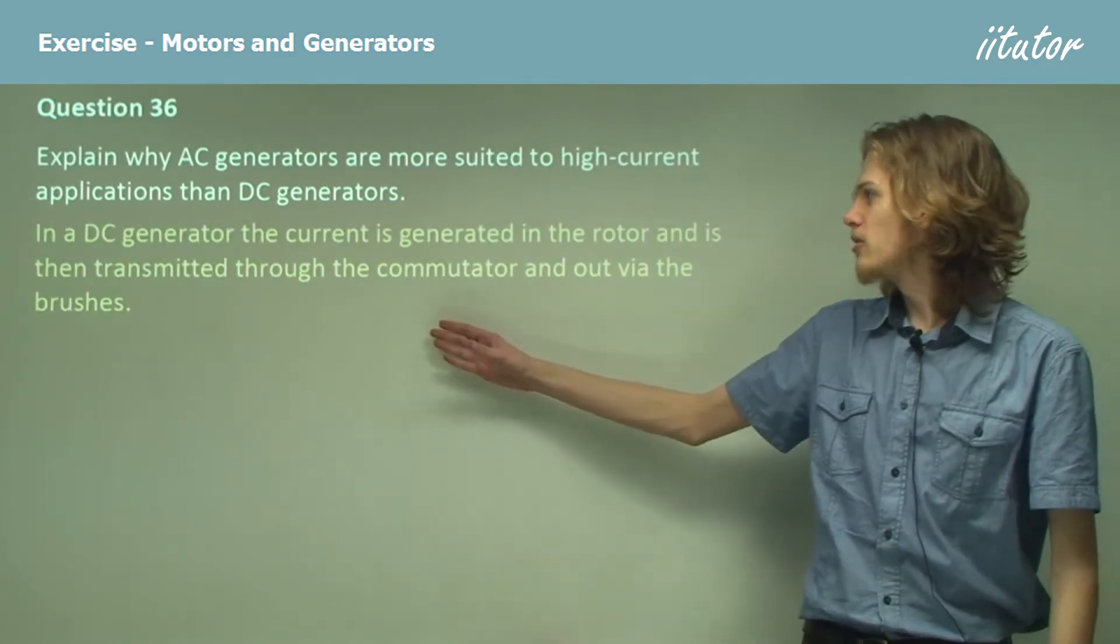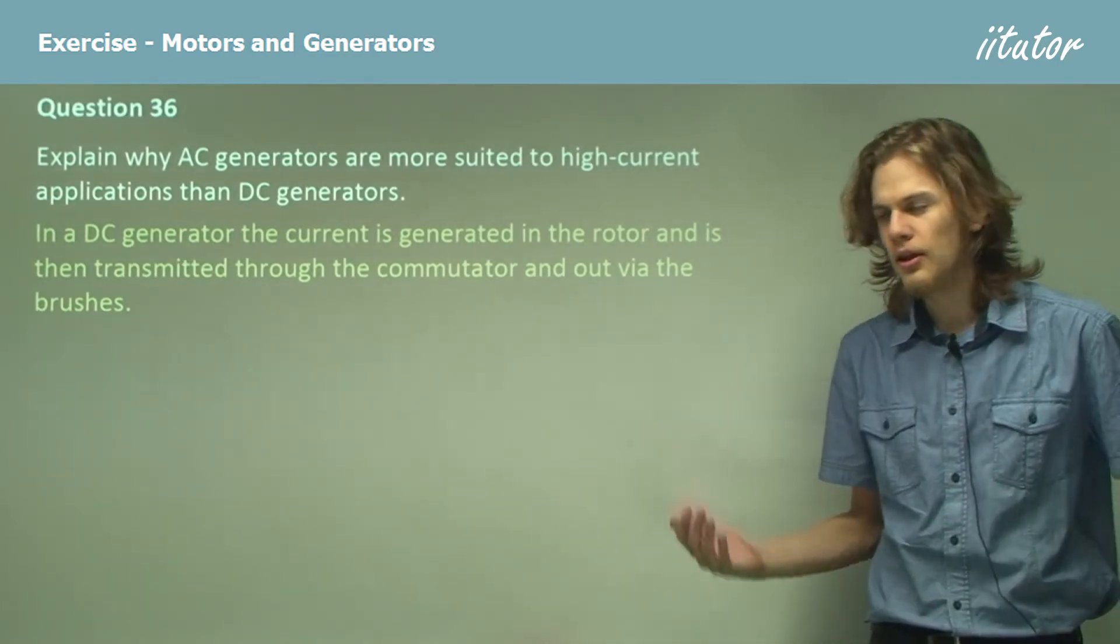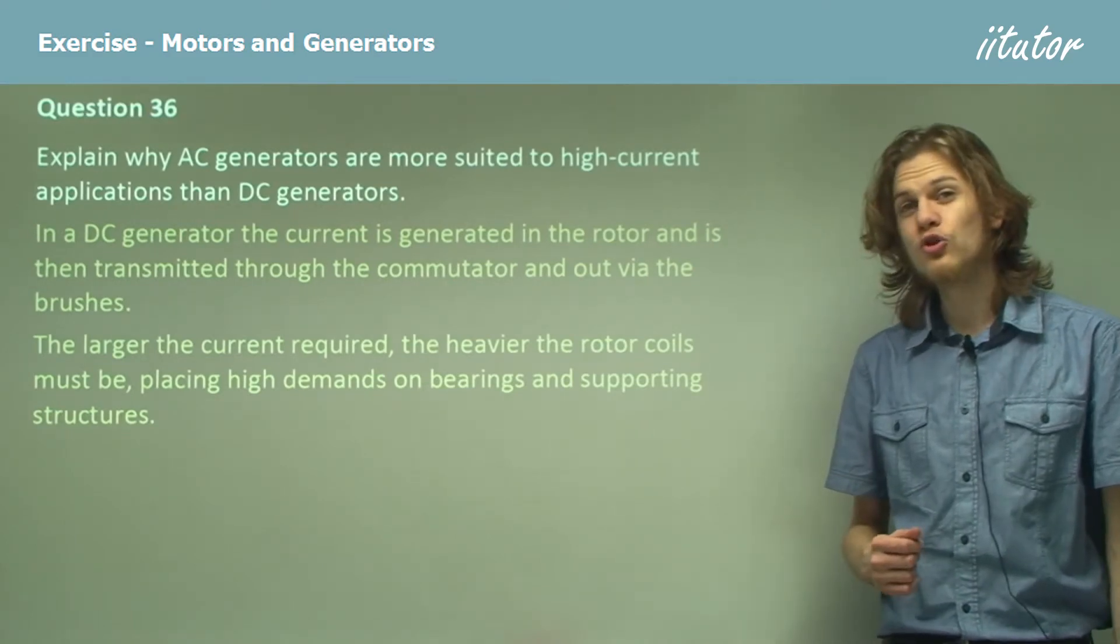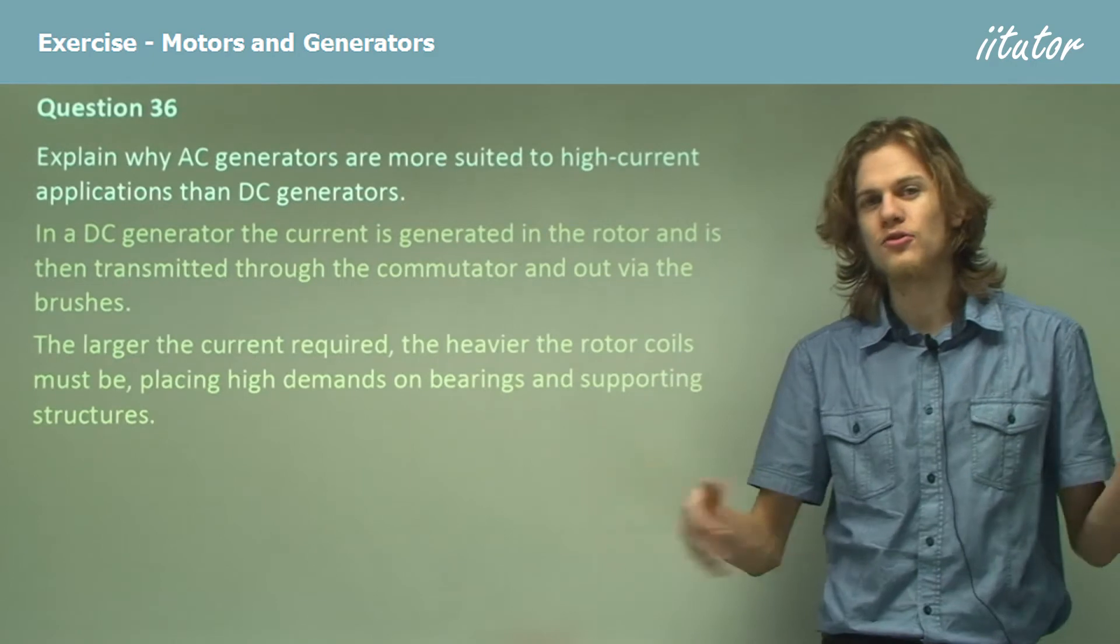In a DC generator, the current is generated in the rotor and transmitted through the commutator and out via the brushes. The larger the current required, the heavier the rotor coils must be, placing strain on the axle and supporting structures.